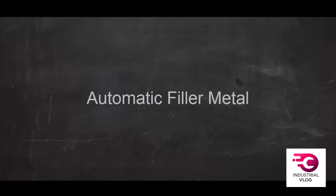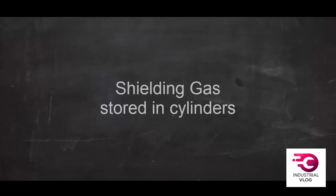In summary, MIG welding is an electric arc welding process. It uses a consumable wire electrode. Filler metal is added automatically, and the shielding gas comes from a high-pressure cylinder.